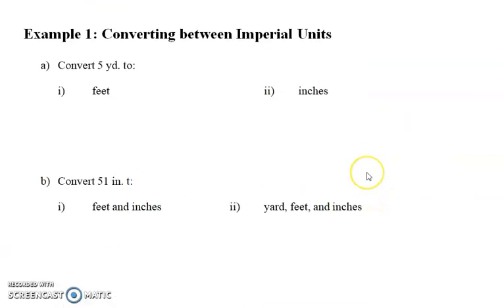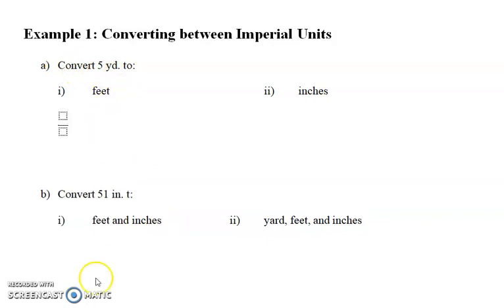So the first example, what we're going to do is we're going to learn to convert between imperial units. So we're going to take 5 yards and we're going to convert that to feet. So the method I like to use here is what's called the factor-label method. You'll use this in chemistry and science courses. So what I do is I put X, which means unknown, X feet is equal to 5 yards.